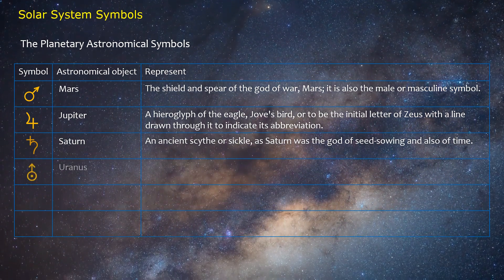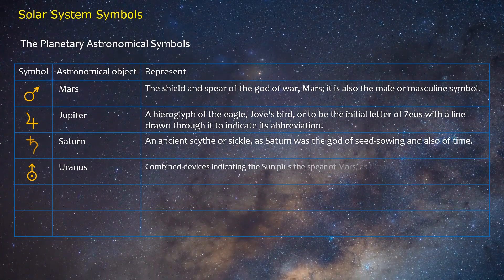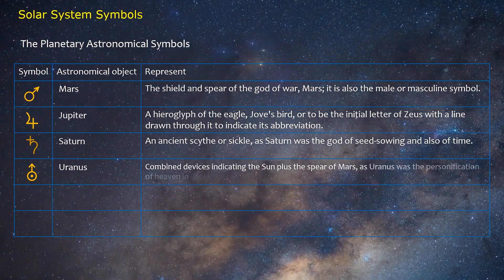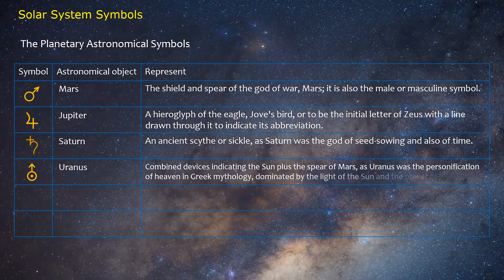Uranus: Combined devices indicating the sun plus the spear of Mars, as Uranus was the personification of heaven in Greek mythology, dominated by the light of the sun and the power of Mars.